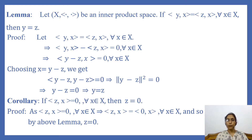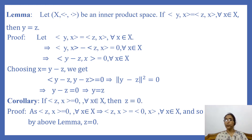First we shall prove a lemma which will be used in the main theorem. The lemma states: let X be an inner product space. If ⟨y, x⟩ = ⟨z, x⟩ for every x in X, then we have to show that y = z.